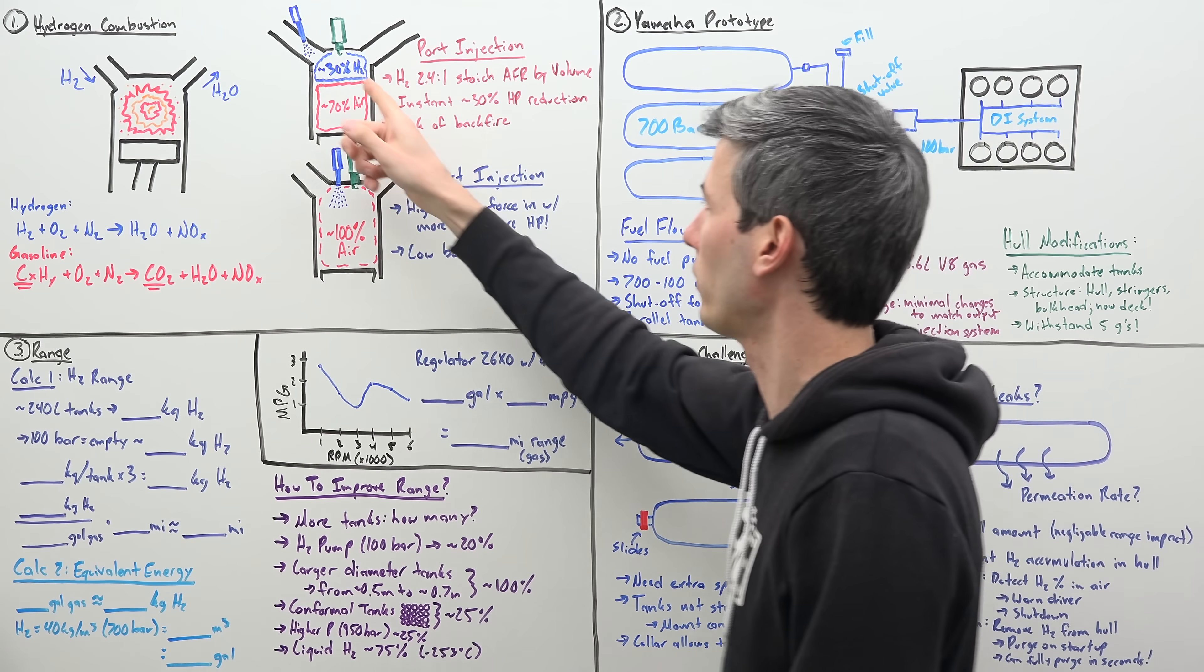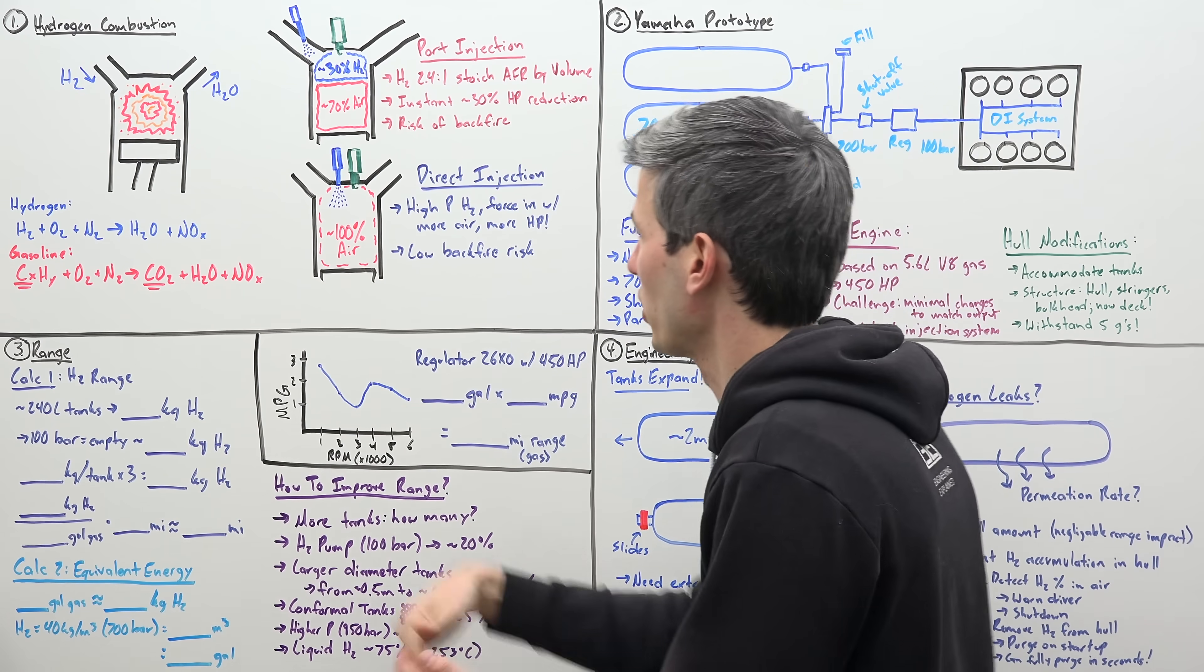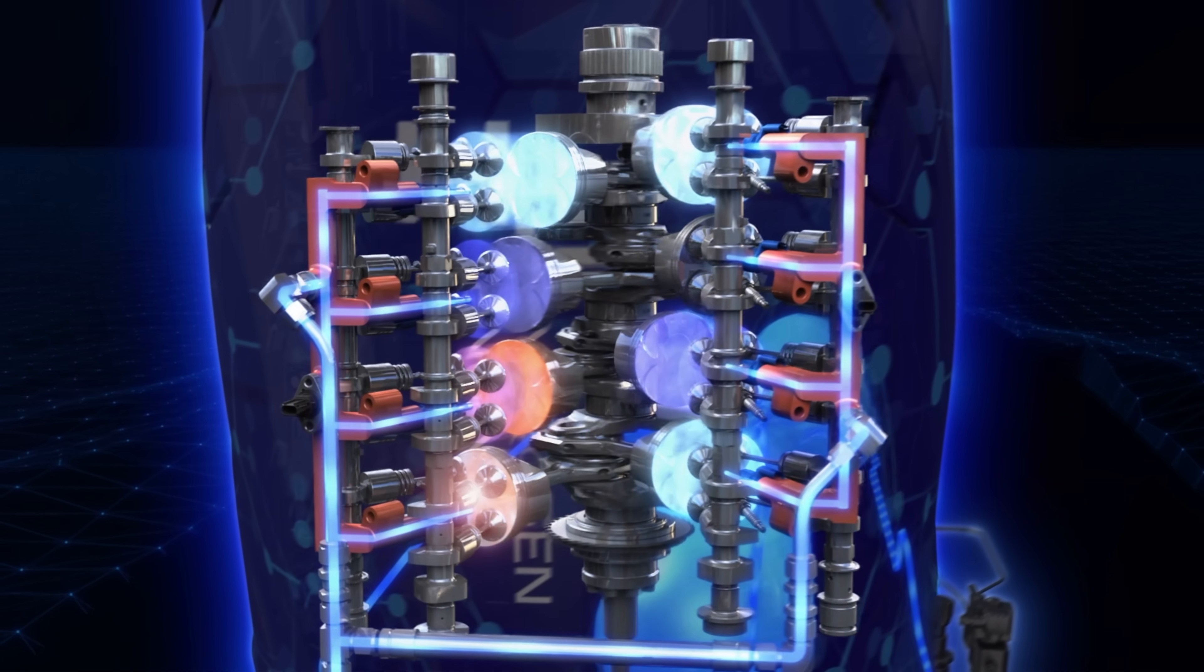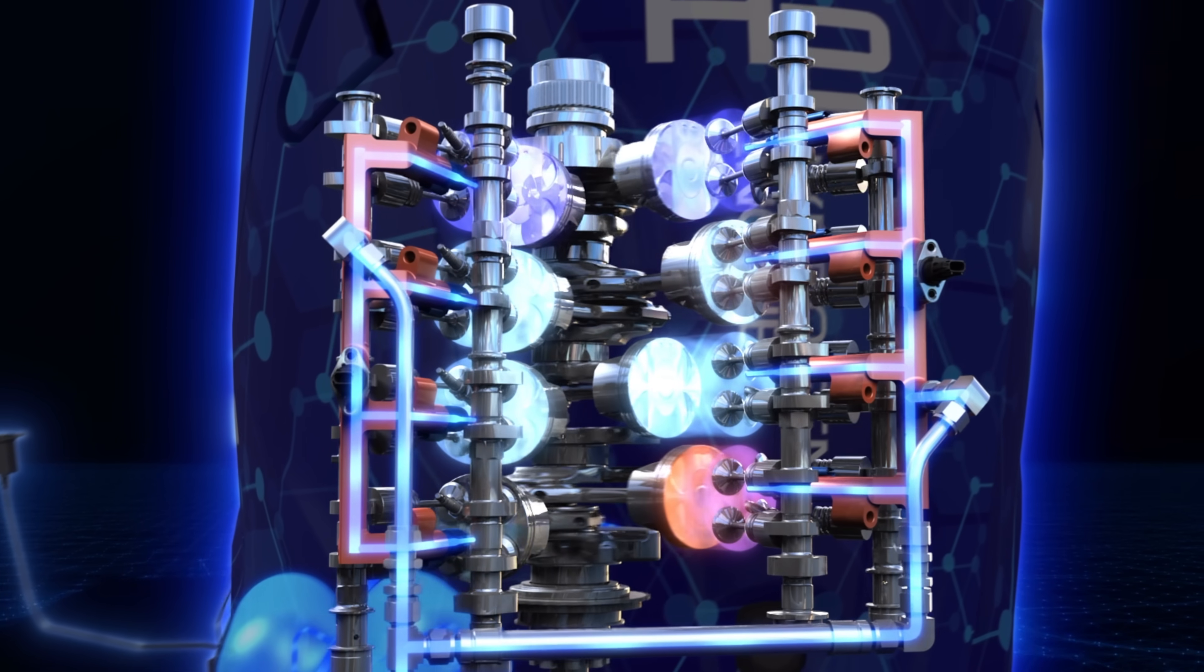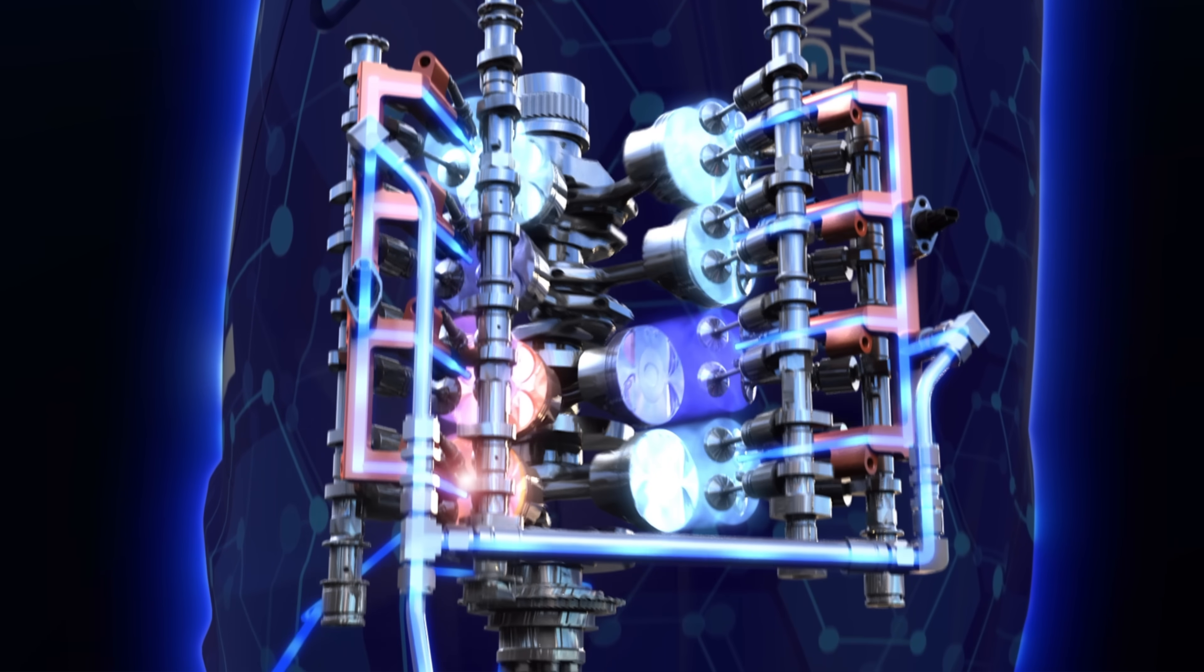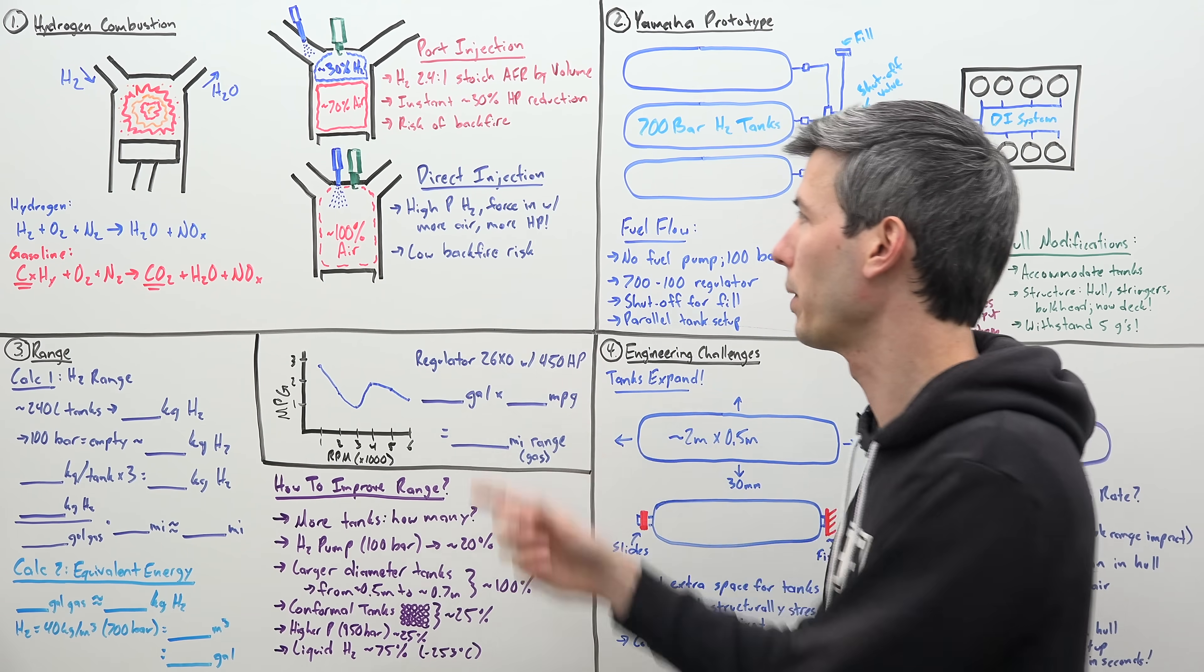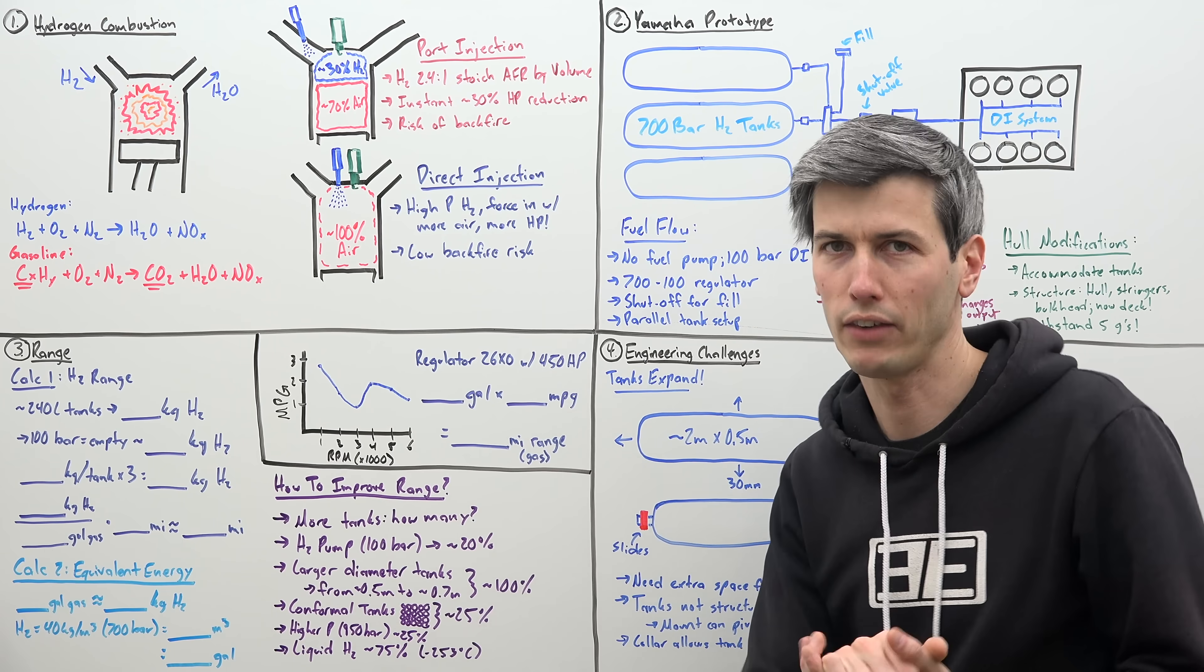You also, of course, have the risk of backfire since you have hydrogen in that intake manifold. Now with direct injection, you can pull in that 100% atmospheric air within that cylinder and then you can use direct injection and pressurize and force in additional hydrogen within that chamber. So you can make significantly more power, especially in these naturally aspirated applications. And of course, because you're keeping that hydrogen within the cylinder, much lower risk of having backfire.